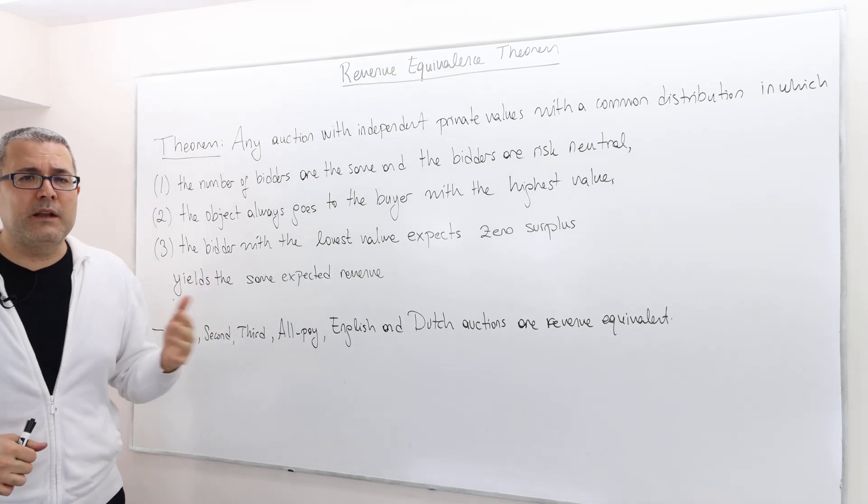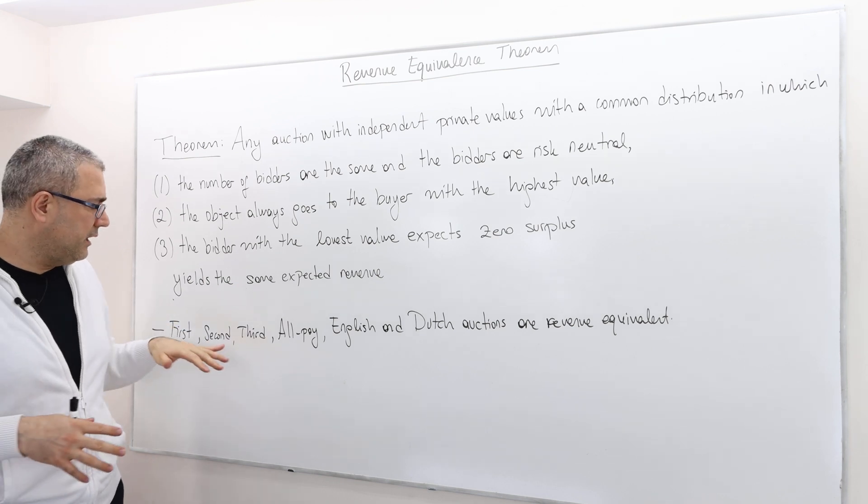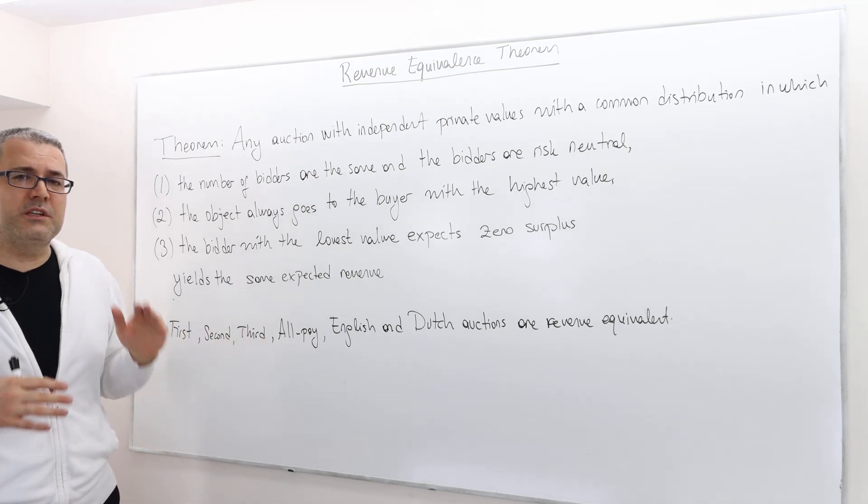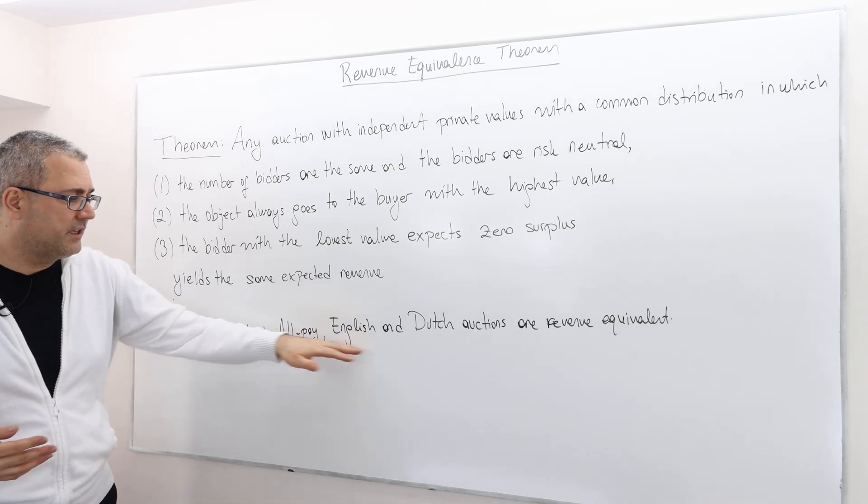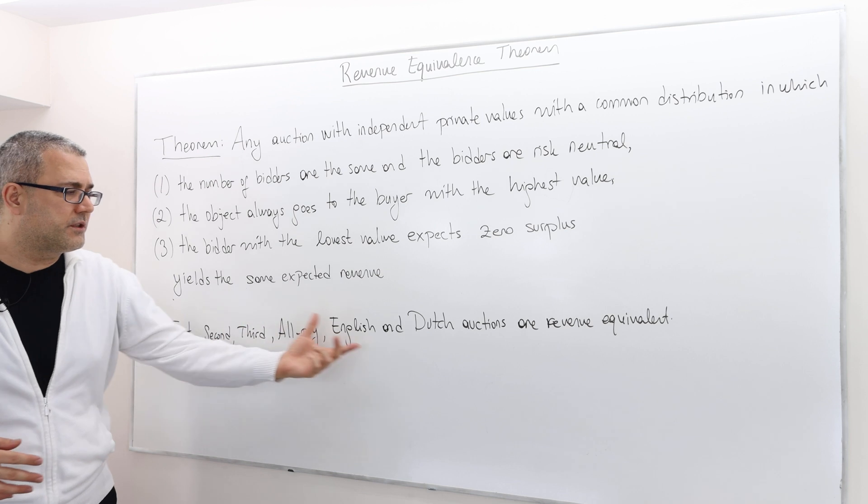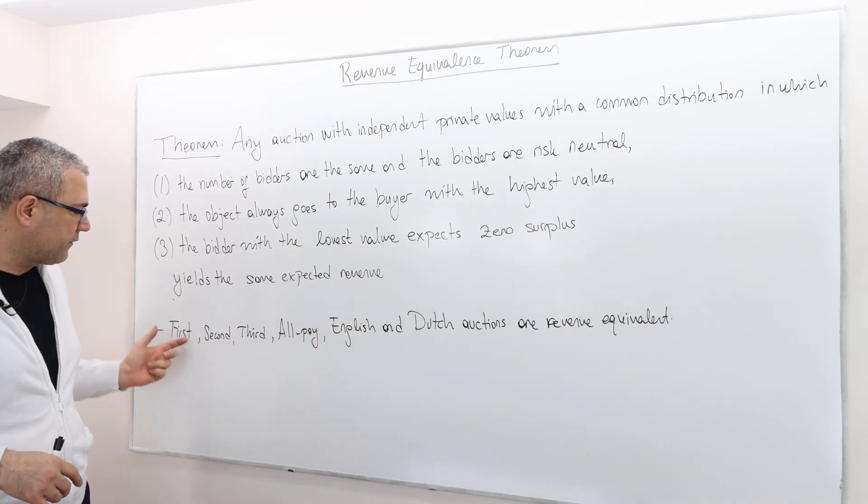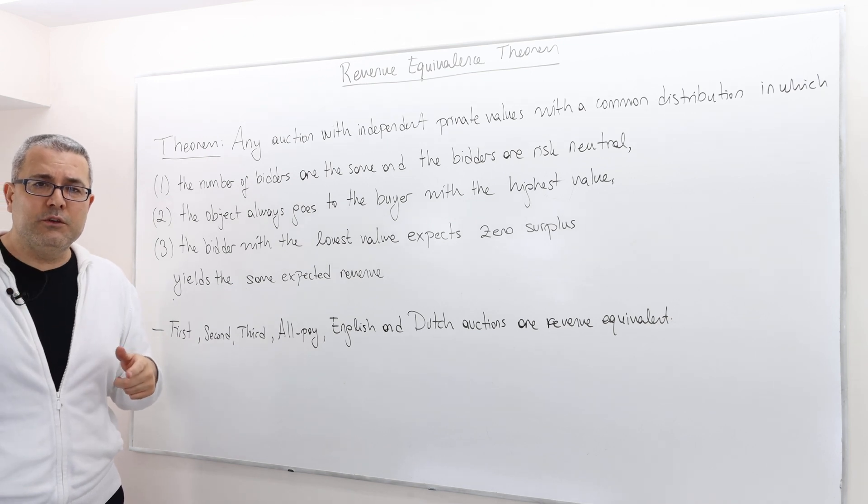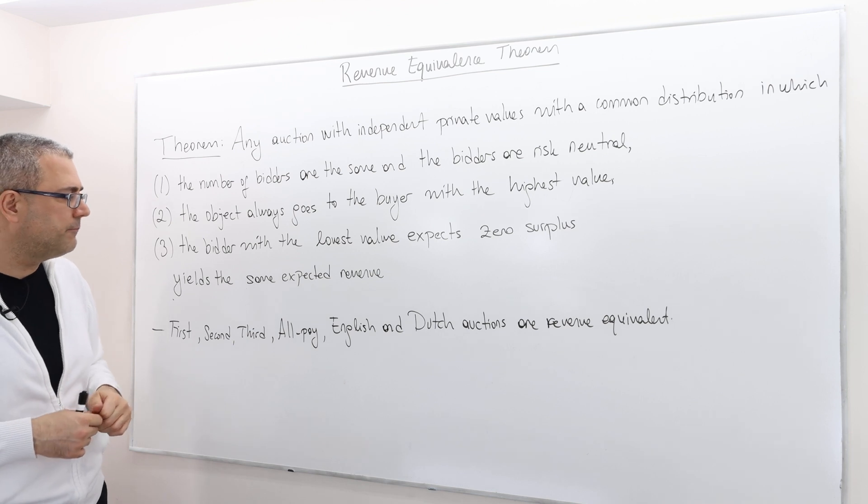In the numerical examples, I will show that the expected revenues of the first and the second price auctions are the same. That makes sense in terms of first and English. They're strategically equivalent. The equilibrium of the first and the equilibrium of the English auction are the same, and so therefore the revenues calculated in those equilibrium are also going to be the same.